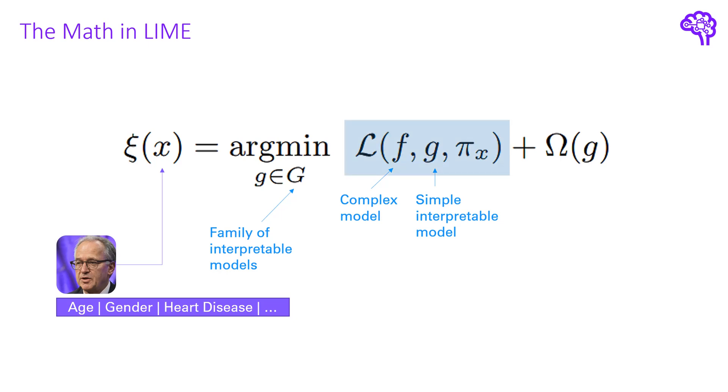This first loss term in our optimization function simply means that we look for an approximation of the complex model F by the simple model G in the neighborhood of our data point X. In other terms, we want to get a good approximation in that local neighborhood. The third argument pi here defines the local neighborhood of that data point and is some sort of proximity measure. We will see more details in a minute.